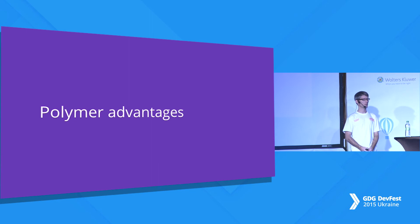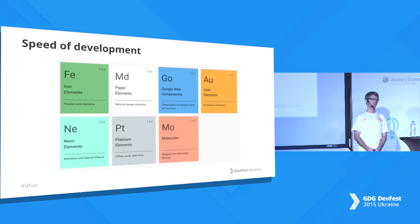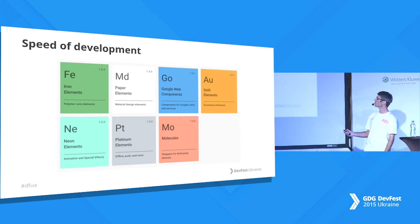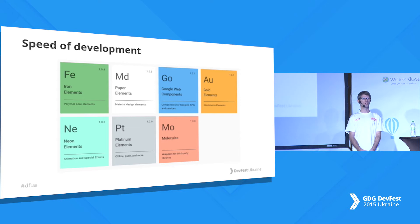Now I'll talk about Polymer advantages. Probably the best advantage is the speed of development, because there is an element catalog — a set of components built by default by the Polymer team. There are elements for material design, Google web components like the Google Map, elements for offline support, and more. So you don't need to build this stuff — you can just use the pre-built components.